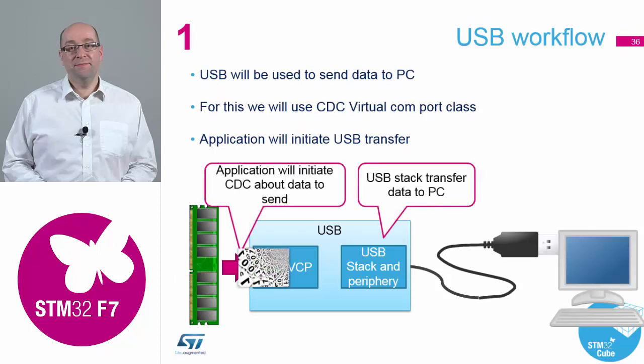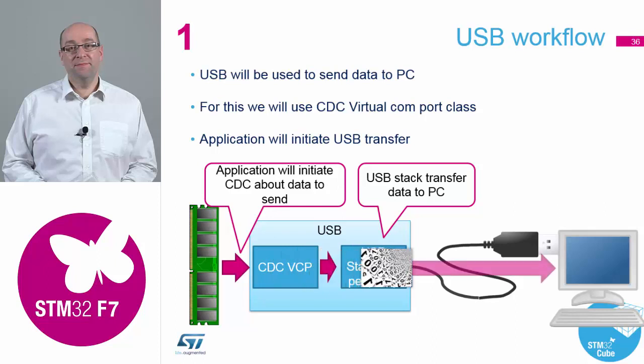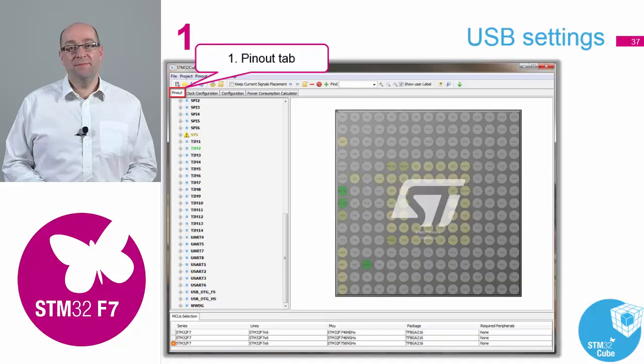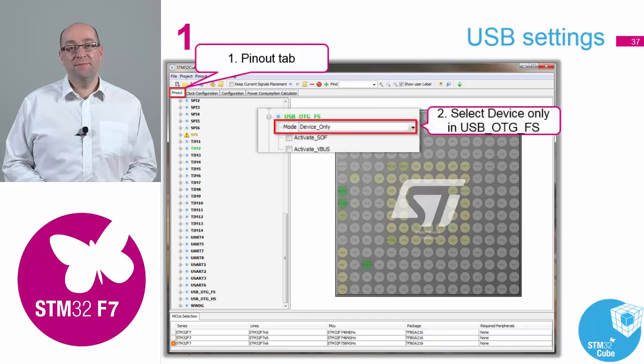So now we're going to transmit our buffer that we've just created in memory out through the USB peripheral to our PC. So we go back to the pin diagram now, and we have to assign the USB peripheral. If you scroll right to the bottom of the peripherals, you will find USB OTG FS — the full speed peripheral we're going to use.